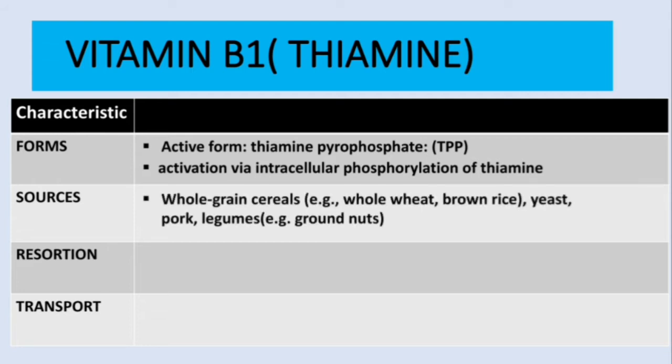The main sources are whole grain cereals like whole wheat, brown rice, yeast, pork, and legumes such as groundnuts. In exam questions, pay attention when they mention that a patient has been eating polished or processed rice — in that case, remember it will be thiamine deficiency.